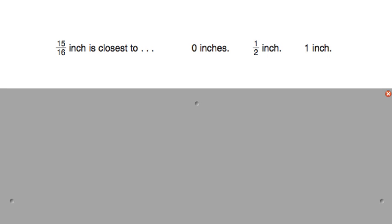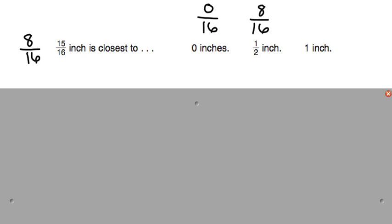We're going to look at 15 sixteenths. What is half of 16? Well, 8 sixteenths represents one half. So now we're going to think: is 15 sixteenths closest to 8 sixteenths, 0, or 16 sixteenths, which also represents 1? Obviously, 15 sixteenths is closest to 16 sixteenths. So in this case, 15 sixteenths of an inch is closest to 1 inch.